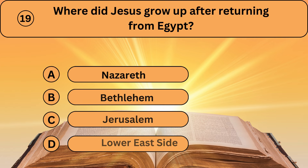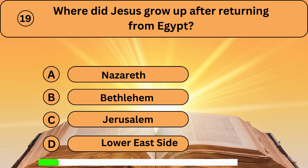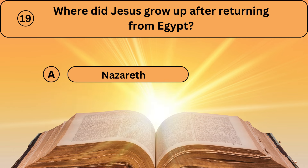Question nineteen. Where did Jesus grow up after returning from Egypt? A. Nazareth. B. Bethlehem. C. Jerusalem. D. Lower East Side. Nazareth is the right answer.